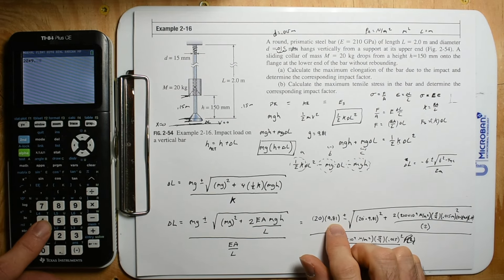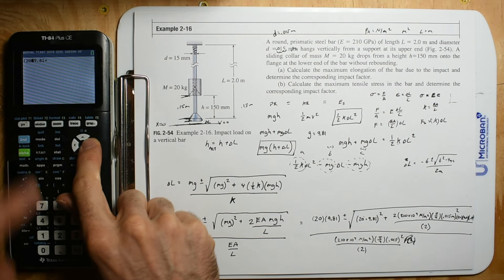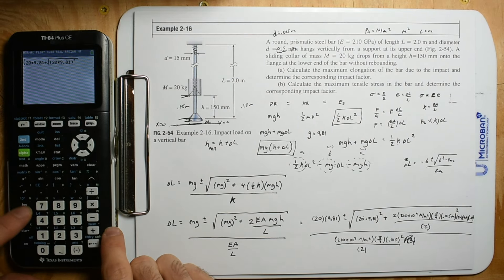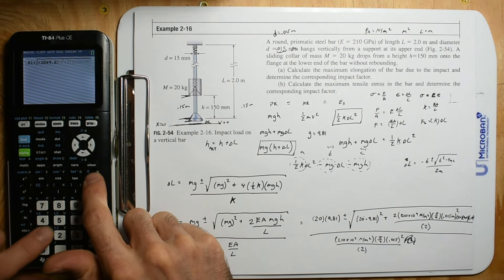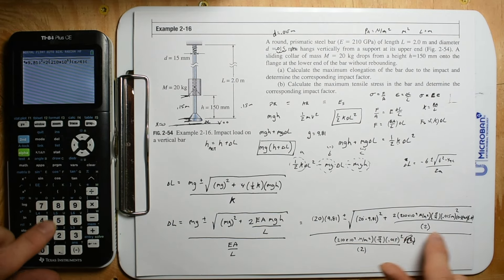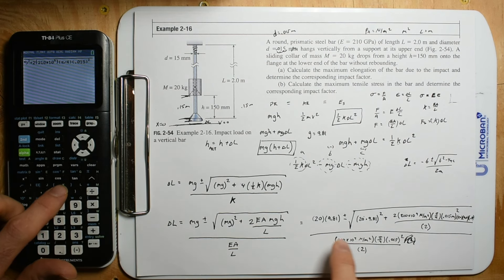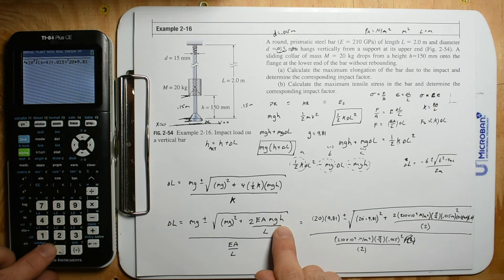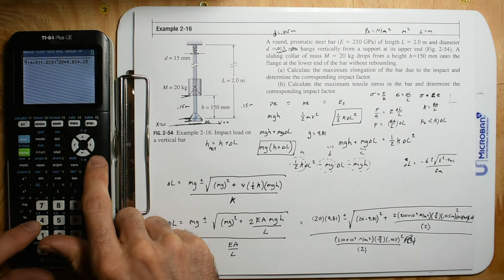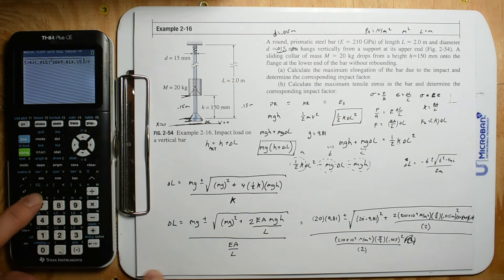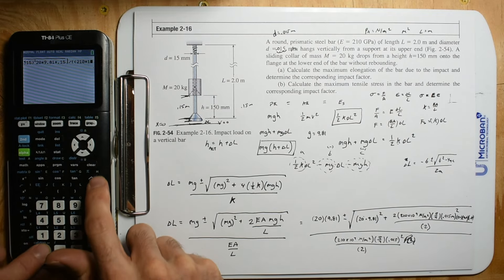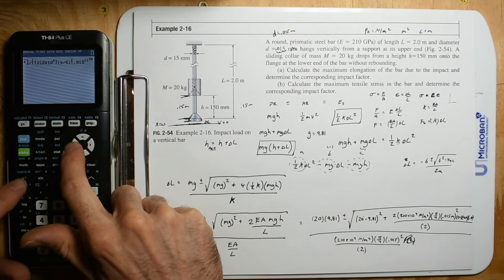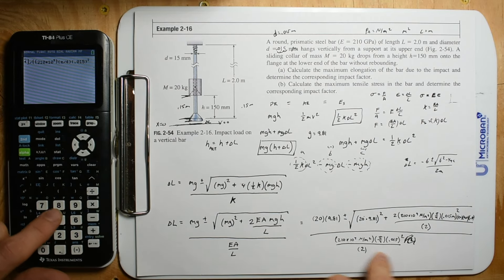We got 20 times 9.81, plus the square root of 20 times 9.81 squared, plus 2 times 210 times 10 to the 9, times pi divided by 4, times 0.015 squared, times 20 times 9.81 times the height of 0.15. End parentheses. Now we divide it all by 210 times 10 to the 9 times pi divided by 4 times 0.015 squared, divided by 2.